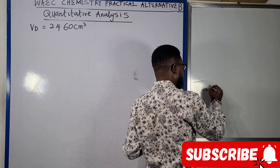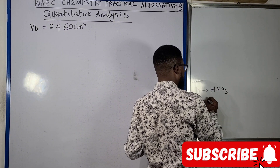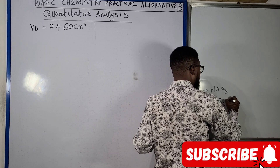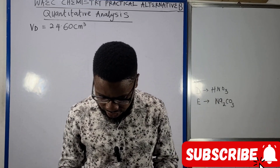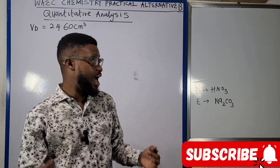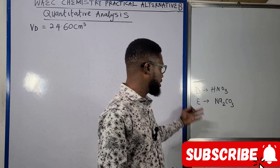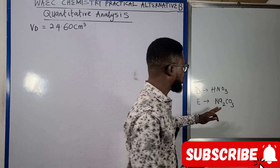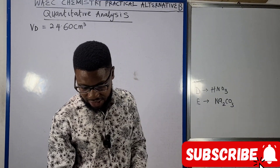D here is HNO₃ and E here is a carbonate salt. In some questions it is hydrated, in some cases it is not hydrated. In the case we are going to look at now, as you'll see in the question displayed on your screen, I will be talking about just the anhydrous form — that's sodium carbonate.